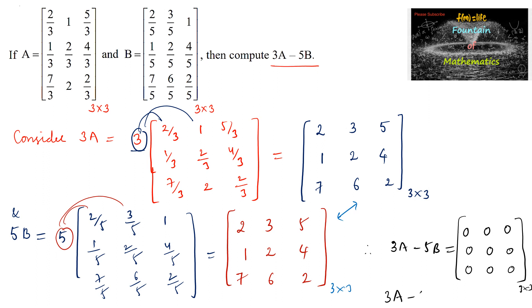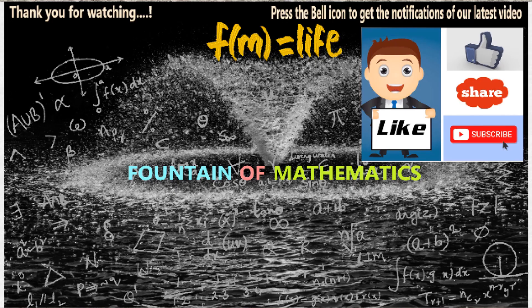Therefore, 3A minus 5B is equal to the zero matrix. Thank you.